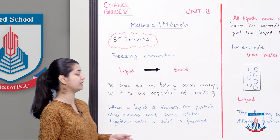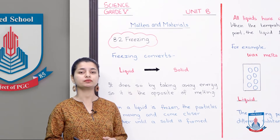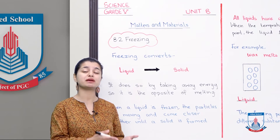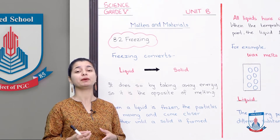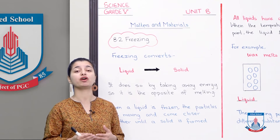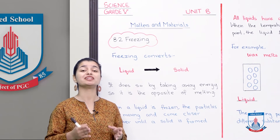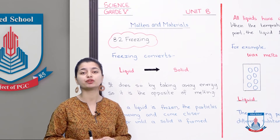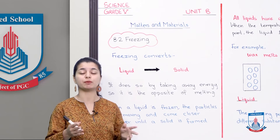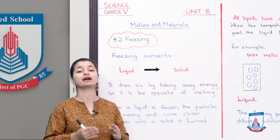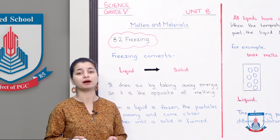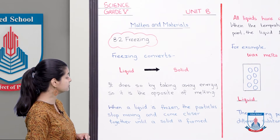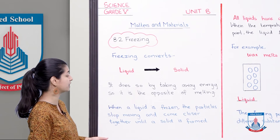Just like we discussed, freezing is the opposite of melting because in melting you give energy to the substance, whereas in freezing you have to take energy from it. The particles in the liquid have more energy and some freedom of movement. When you take energy from the liquid, the particles will stop moving, become fixed in place, and align — and they will become solid particles. When a liquid is frozen, the particles stop moving and come closer together until a solid is formed.